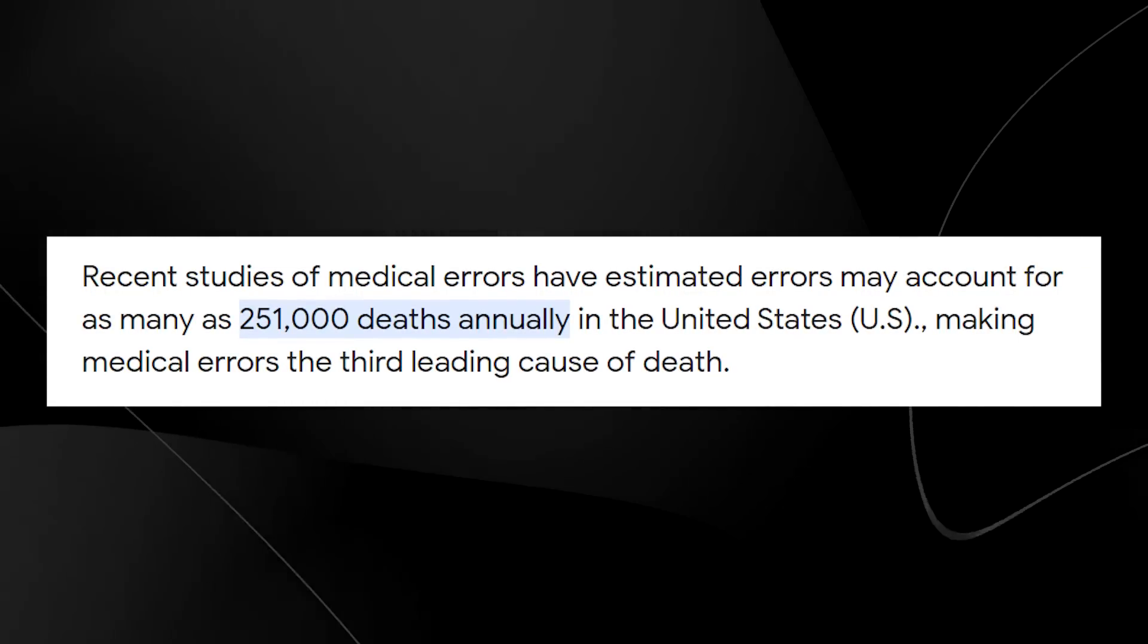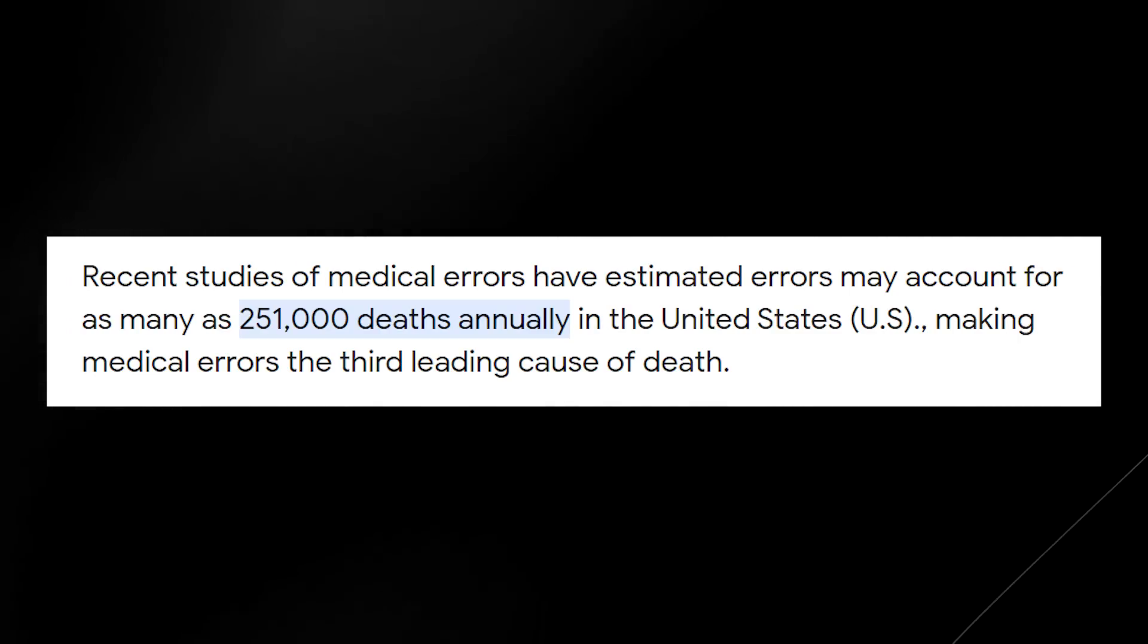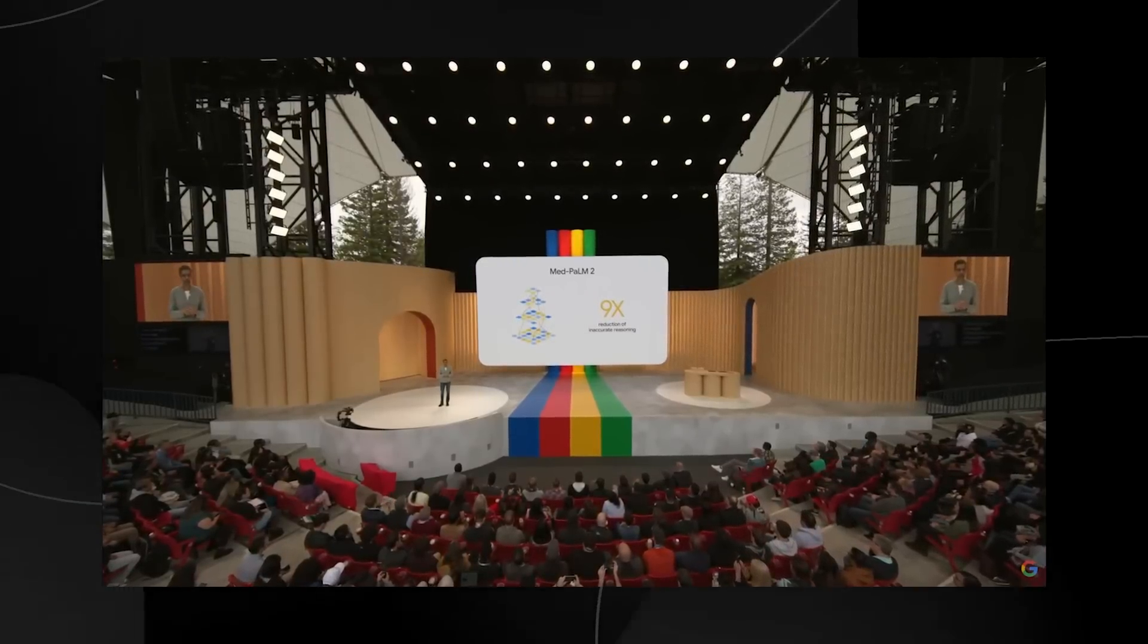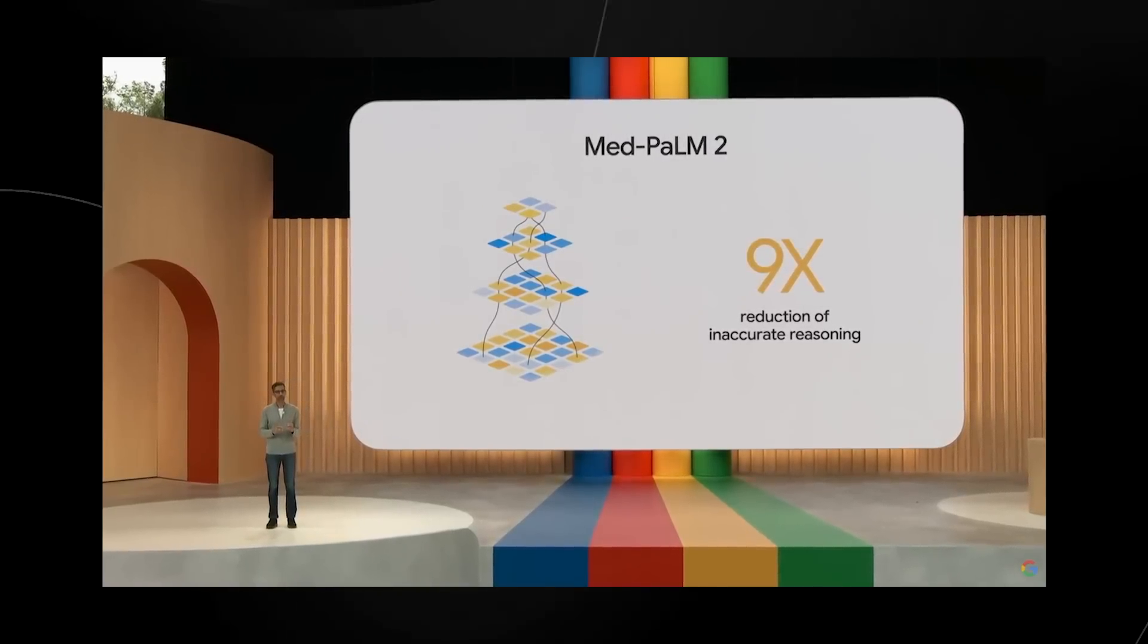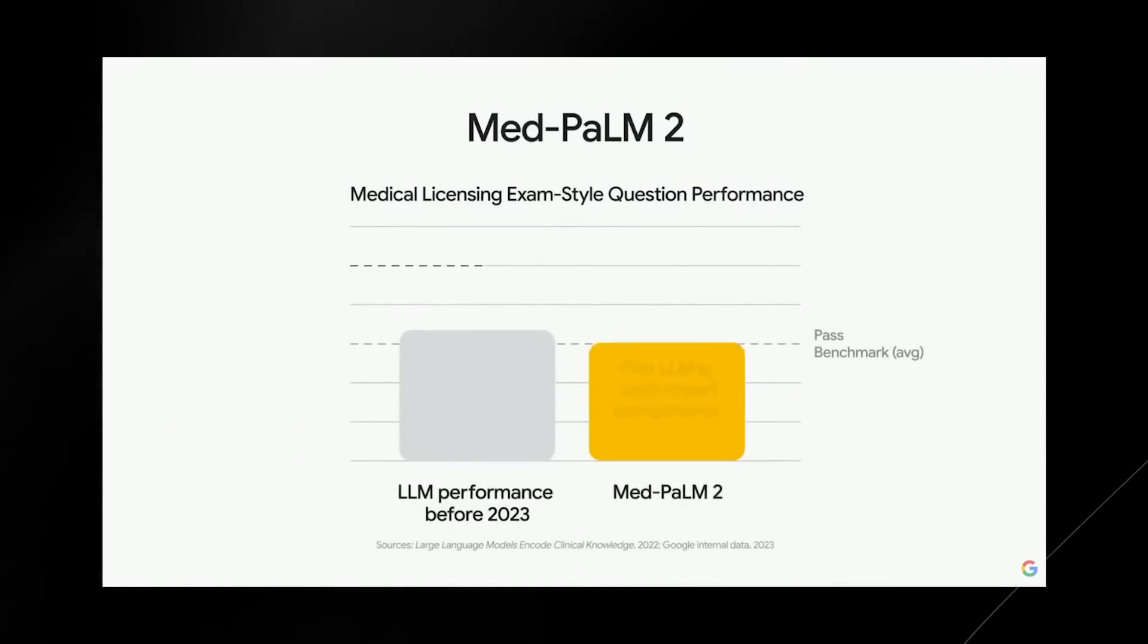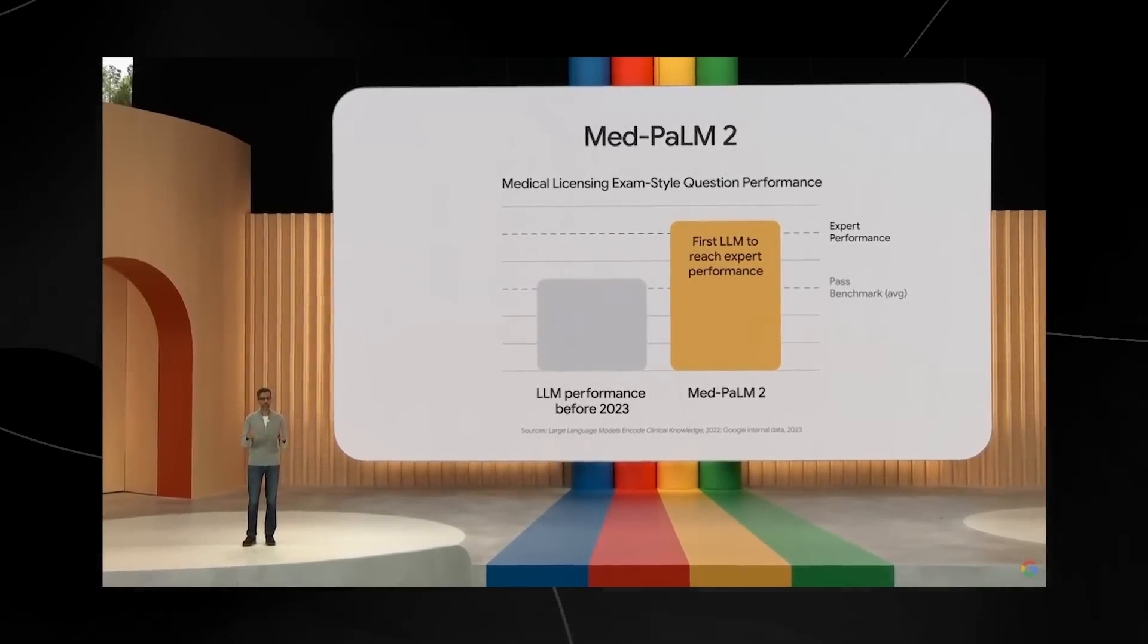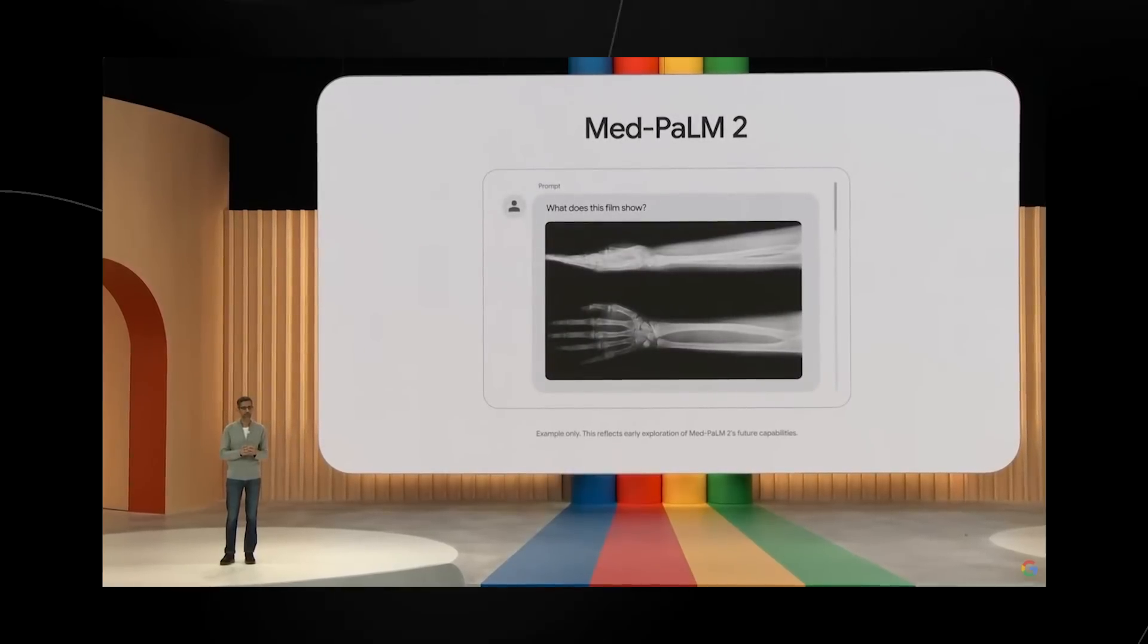Recent studies show that estimated errors may account for as many as 251,000 deaths annually. This is a big problem that Google is trying to fix. With the invention of MedPalm 2, there's a nine times reduction of inaccurate reasoning. They're improving the accuracy of these diagnoses, and it seems to be working very well. You can see that LLM performance before 2023 and then MedPalm 2 actual benchmark reaching expert performance level, which is impressive because this stuff is moving very quickly.